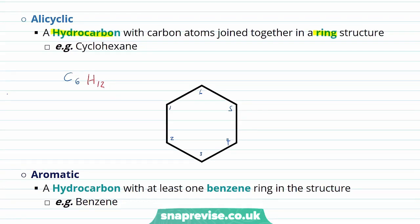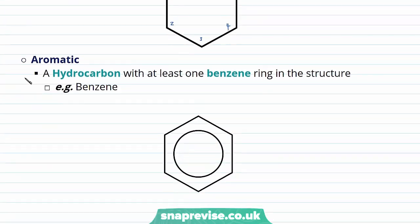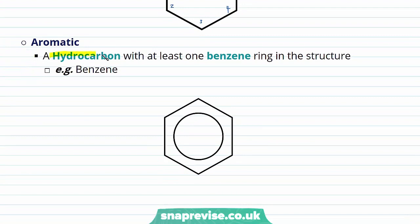The final type of hydrocarbon we're going to look at are our aromatic hydrocarbons. These are hydrocarbons with at least one benzene ring in the structure. The example we're looking at is the most basic — it is simply benzene. Benzene is a chemical you may have come across before. It's a really interesting chemical with a really interesting structure. Benzene has a formula of C6H6 and is represented with a ring representing the delocalised electrons that exist in its structure.